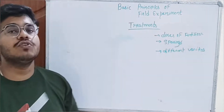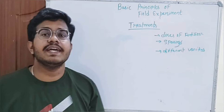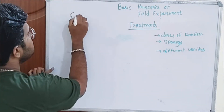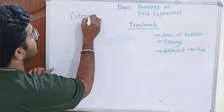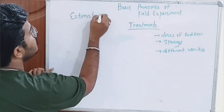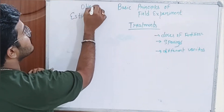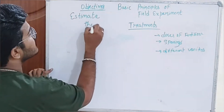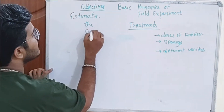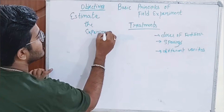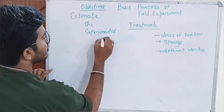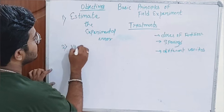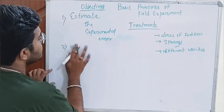Before conducting a field experiment, we have to go through certain basic principles. The main objectives of conducting any field experiment are: to estimate the experimental error, and to validly estimate the experimental error.